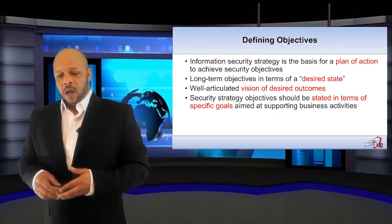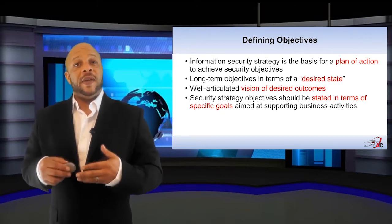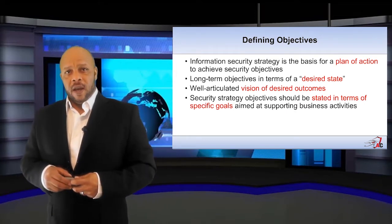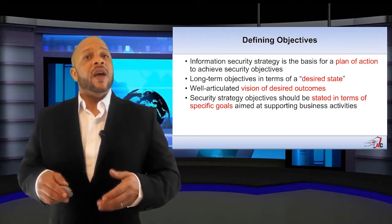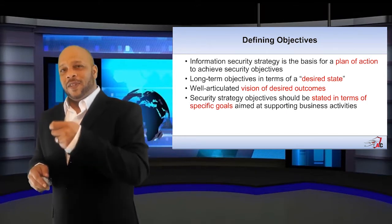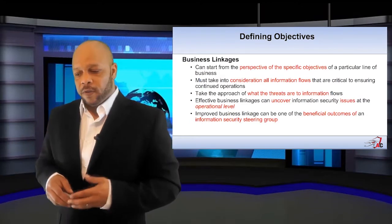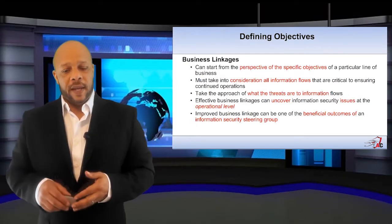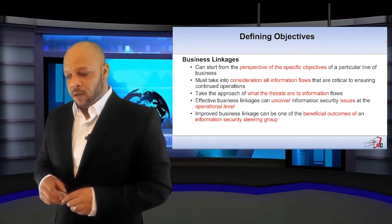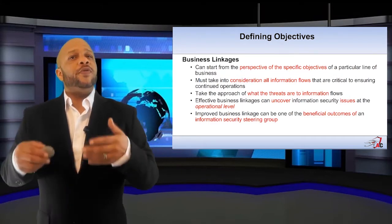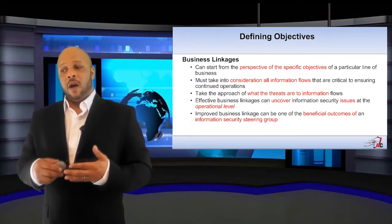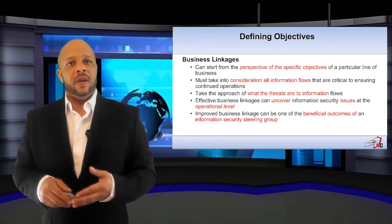Once we've defined our goals, we need to define our objectives. We need to think about what is our desired state — our long-term objective for our environment. This needs to be well articulated with specific desired outcomes. Each objective should be stated in terms of specific goals, not generalities. As part of defining these objectives, we need to look at the business linkages, taking into consideration all information flows and threats to that information. By doing a thorough analysis of the business linkages, we often uncover operational issues we didn't even know we had.